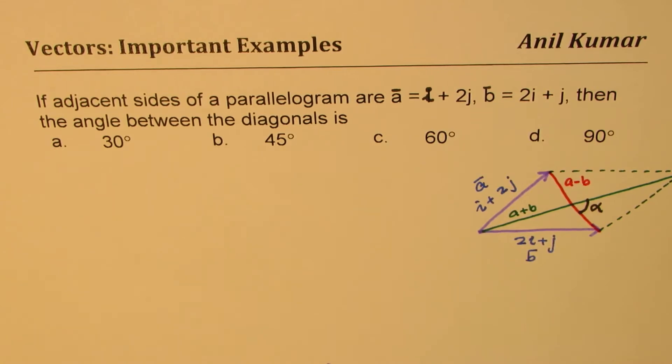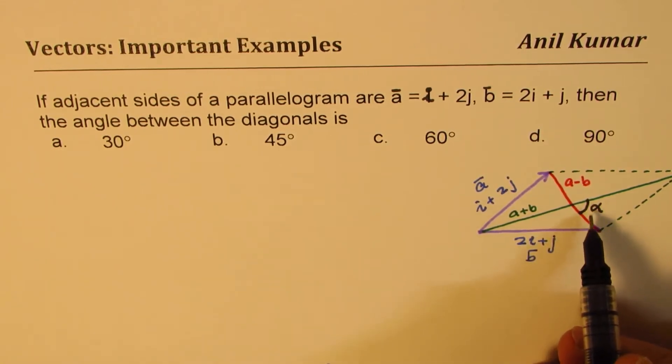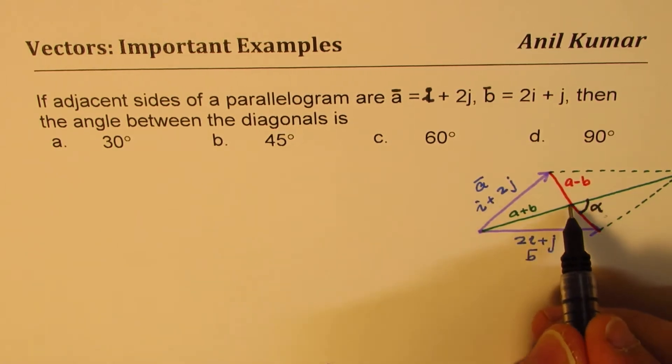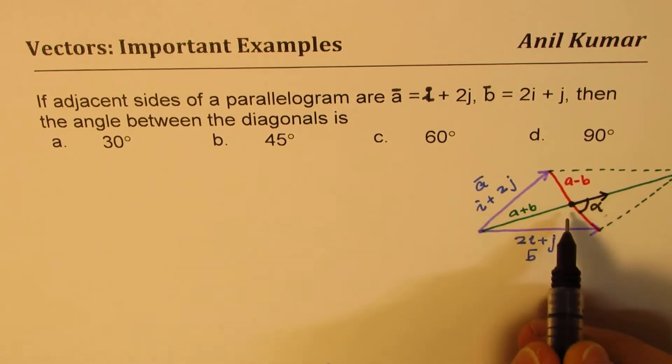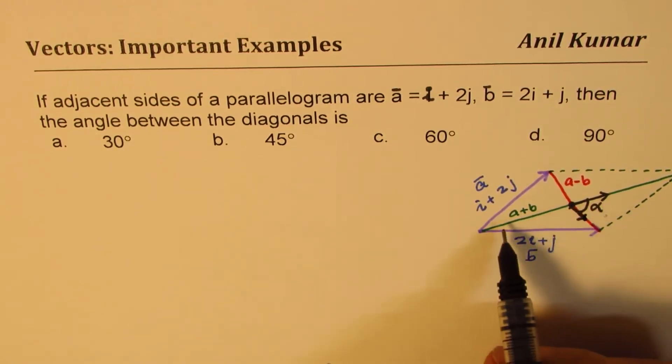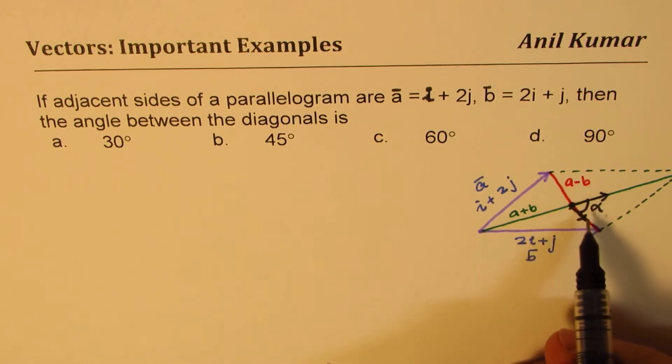So how will you find the angle? To find the angle we could use the dot product. Since these are the two vectors, and the angle between them we need to find.